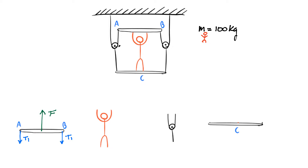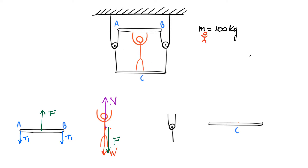Now let's look at all the forces acting on the man. The earth is pulling down on him, so he has a weight. He's also standing on the platform, so there's a normal force — this is the normal force due to platform C pushing up on the man. Now there's one more force. Remember force F was the force of the guy pushing up on platform AB; Newton's third law tells us that to every action there's an equal and opposite reaction, so we also have to include this force F acting downward on the free body diagram for the man.